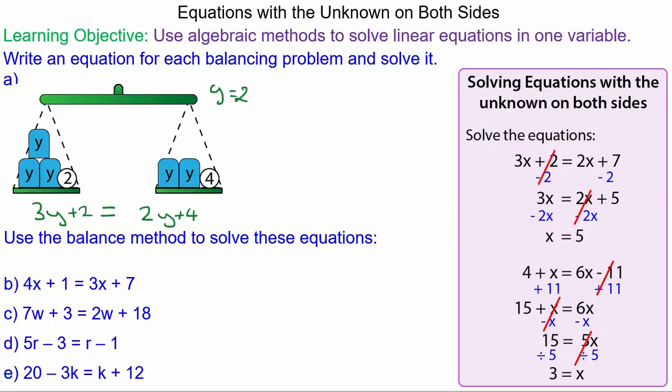For question B, we have 4x plus 1 equals 3x plus 7. So we can take away 3x from both sides. 3x take away 3x is 0, and 4x take away 3x is x. So we have x plus 1 equals 7.